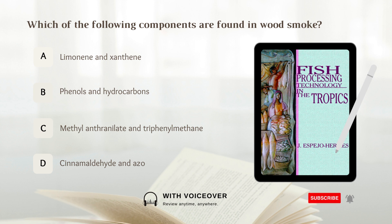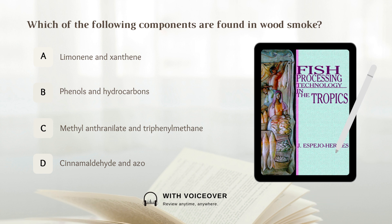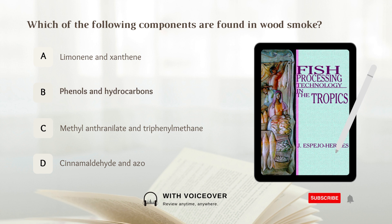Which of the following components are found in wood smoke? A. Limonene and xanthine. B. Phenols and hydrocarbons. Answer: B. Phenols and hydrocarbons.